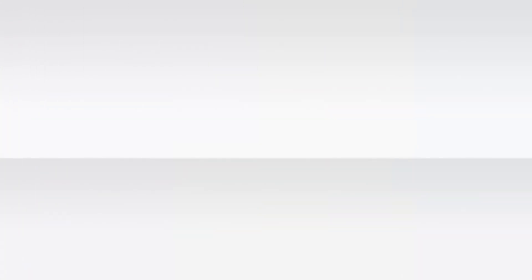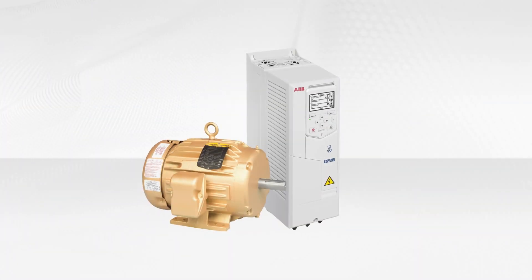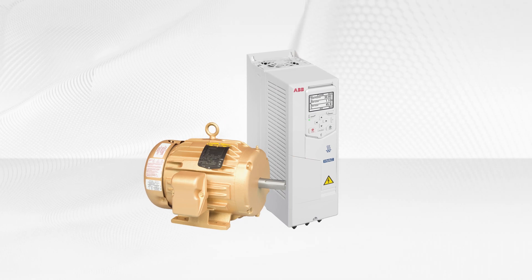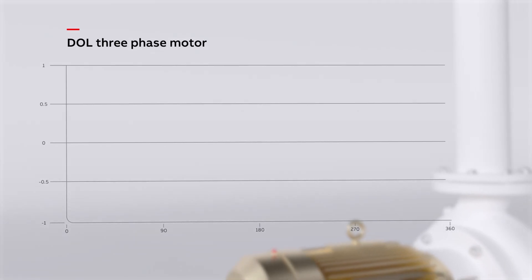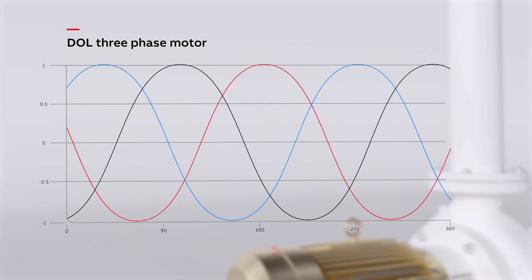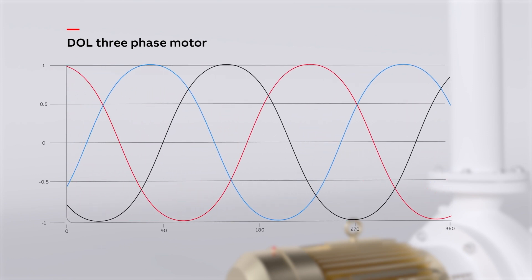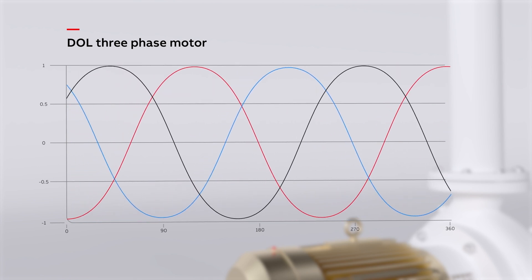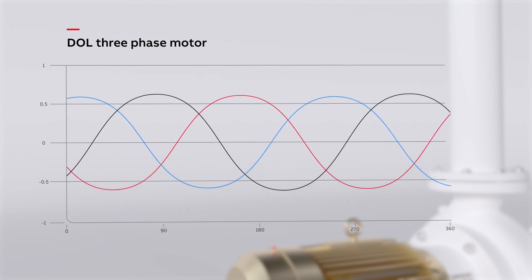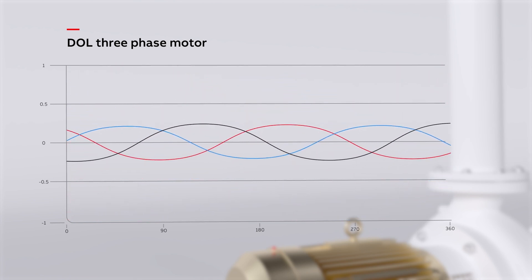Let's look at the difference between a direct-online motor versus an inverter-driven motor run with a VFD. When using a direct-online motor, the three-phase wave power is balanced in frequency, phase, and amplitude. When properly balanced, the vector sum of the three phases equals zero volts.